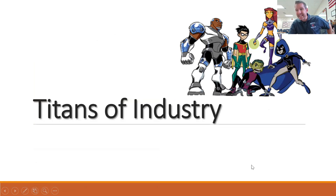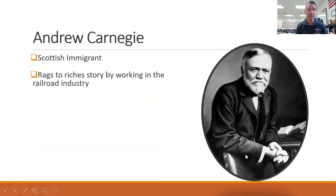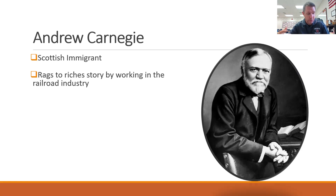So let's talk about a couple of these big-time titans of industry and what they did to get their fortunes. One of the biggest was Andrew Carnegie. He was a Scottish immigrant with a rags-to-riches story — he came as a young boy with his family and worked in the railroad yard as basically a messenger boy. One day there was a big tie-up in the railroad yard, and he was responsible for running messages all across the rail yard and did a really good job helping solve the problem that day.